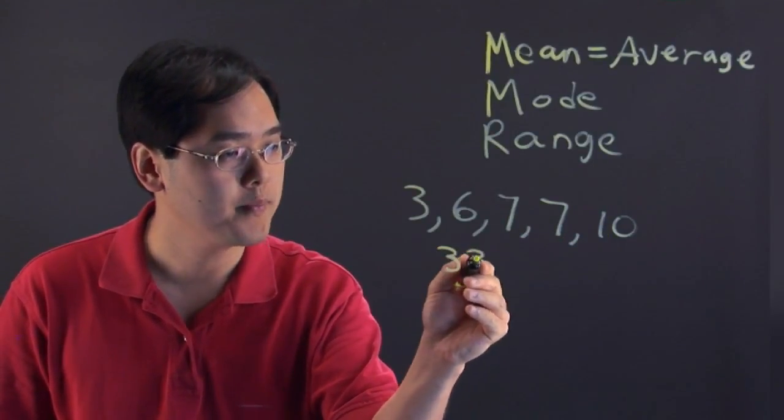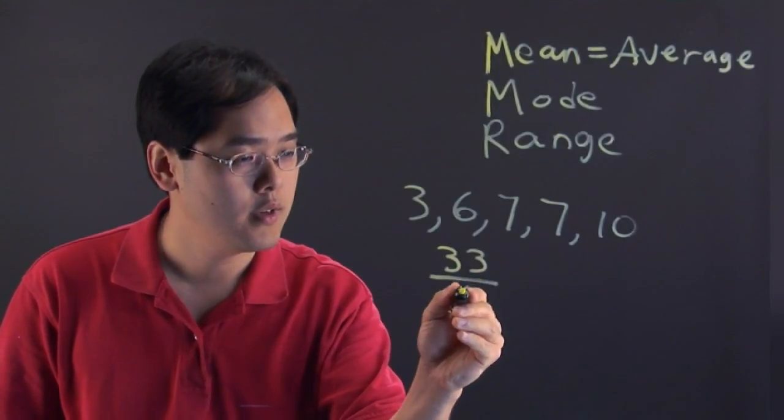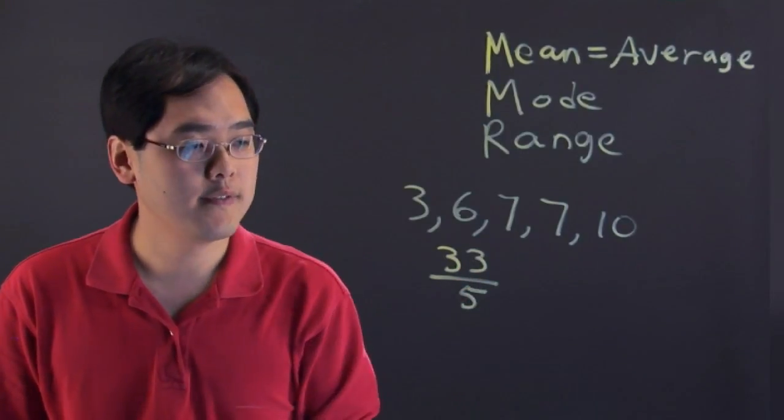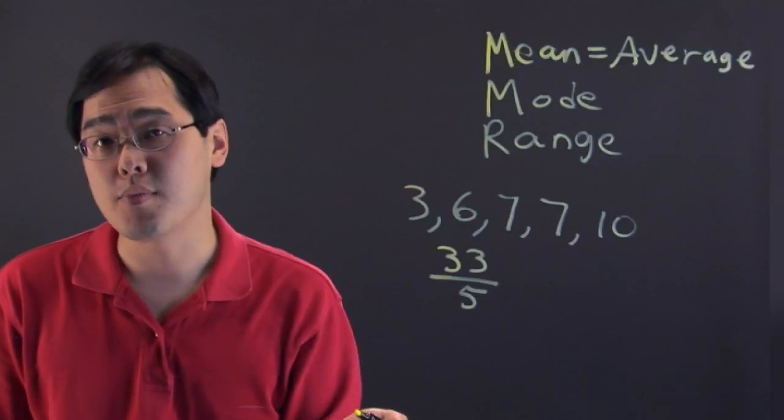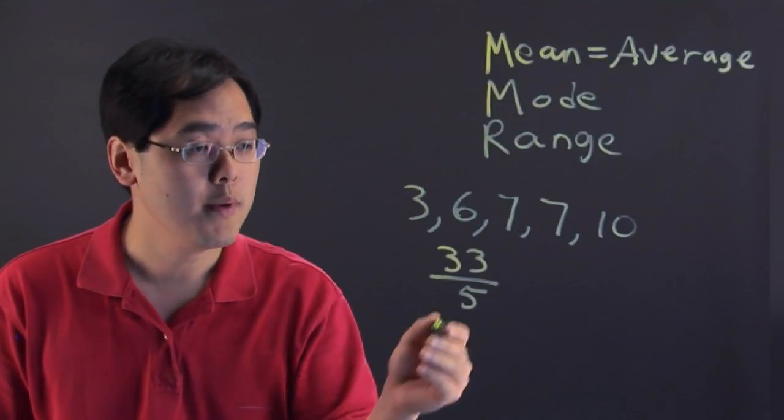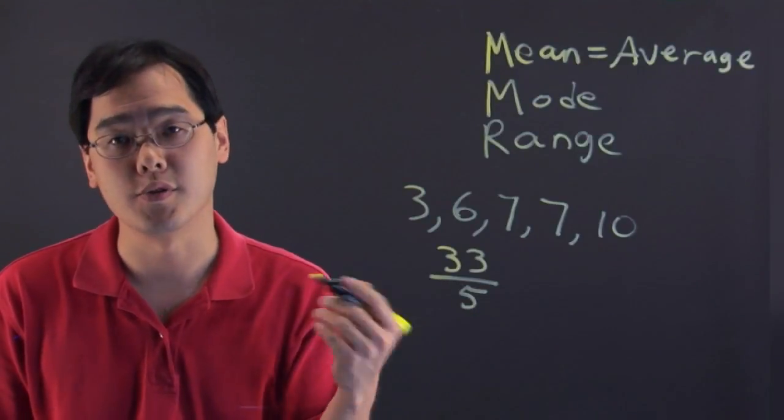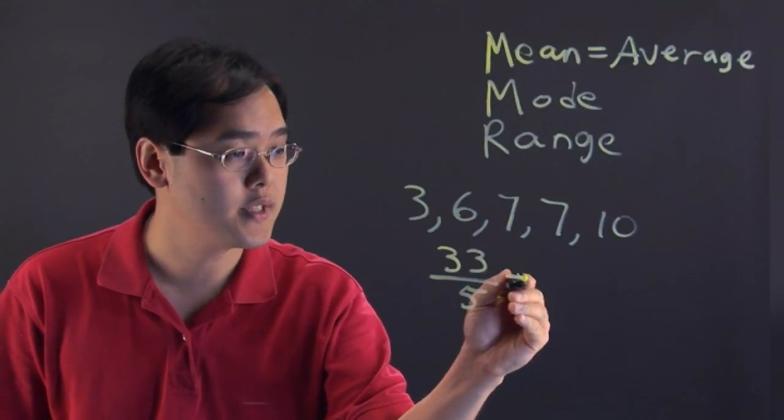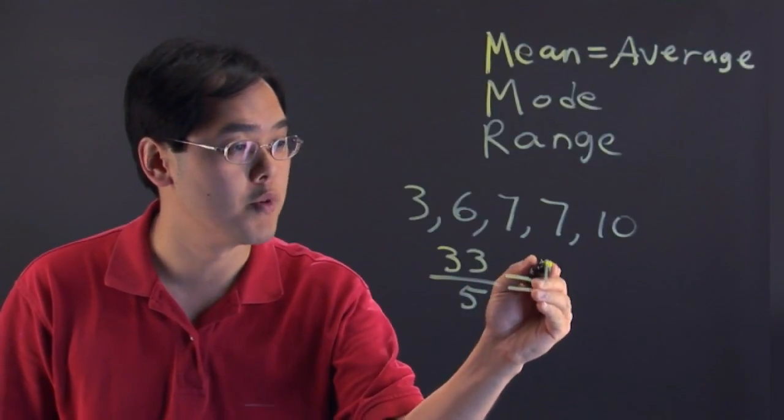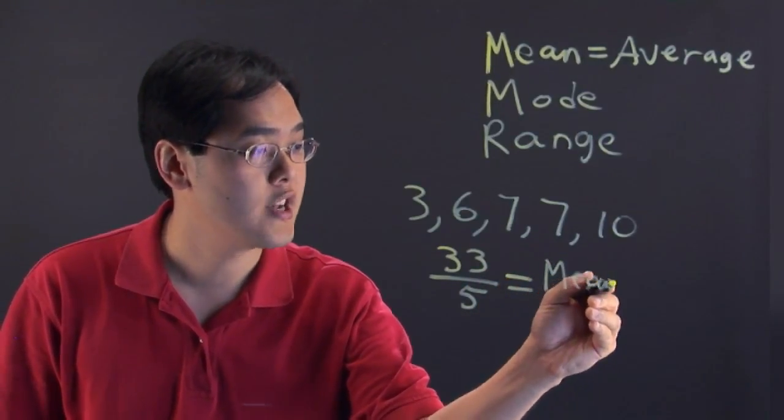So we're going to do 33 divided by 5. If you want to leave it as an improper fraction, you're more than welcome to, but as you can see, this is not reducible. So this is your mean or average.